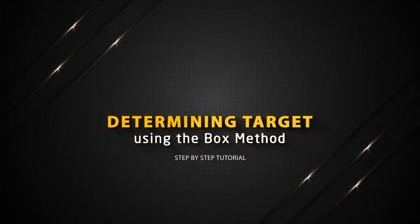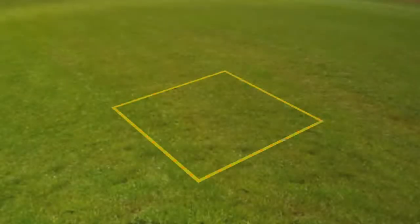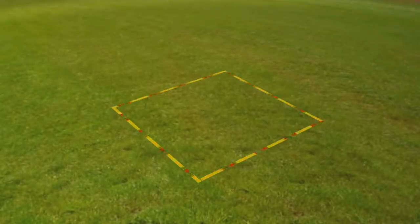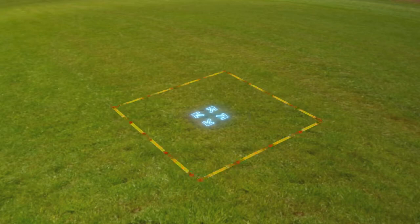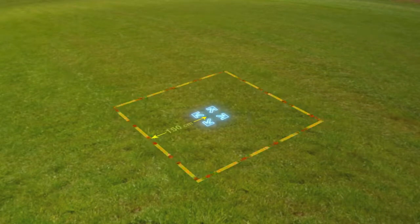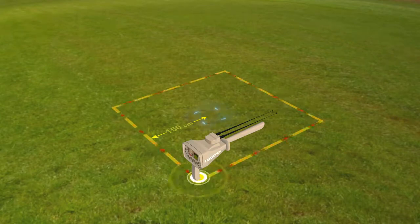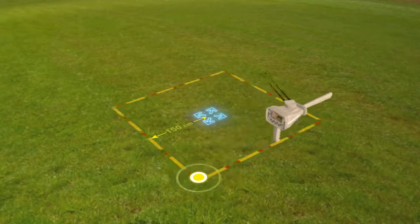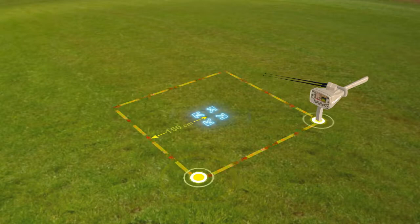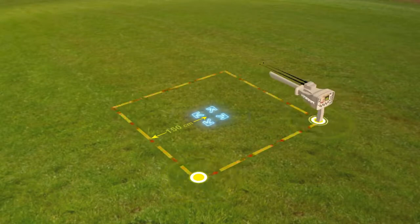Determining target using the box method. The user draws a square around the target that was previously found at a distance of 150 centimeters from the center. Then the user moves towards the second point of the square so that the antennas move towards the target while the user moves from one point to another in the square.